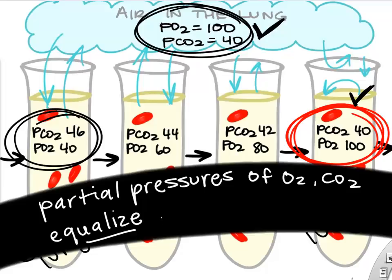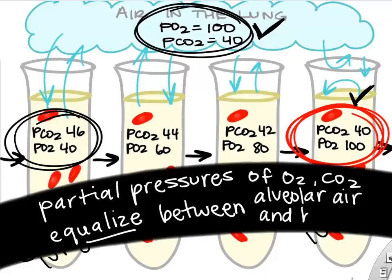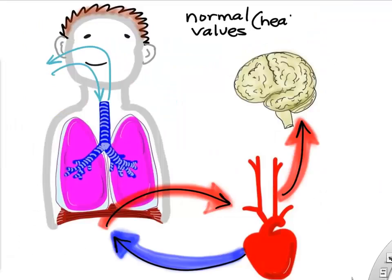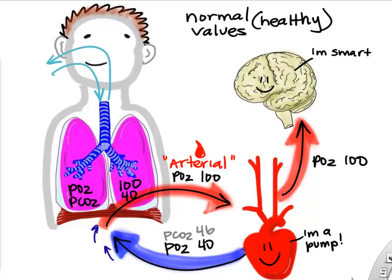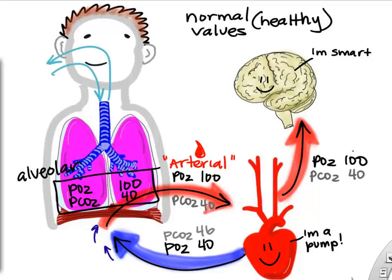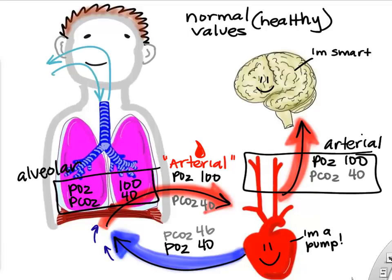The partial pressures will always equalize in a healthy lung. The alveolar values and the blood leaving the lung will become equal in terms of PO2 and PCO2. Normal expected values in a healthy breathing person: PO2 in the lungs is 100, venous blood entering the lungs has a PO2 of only 40, and the PO2 of arterial blood leaving the lung becomes 100 because it equalizes. For PCO2, venous blood going to the lungs has 46, the PCO2 in the lung is 40, so the arterial blood leaving the lung will have a PCO2 of 40. The alveolar and the arterial blood PCO2 and PO2 will always be equal.